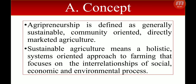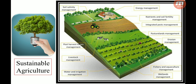Sustainable agriculture means a holistic, system-oriented approach to farming that focuses on the interrelationships of social, economic, and environmental processes. It creates a balance between these three dimensions and does not affect the environment in a bad manner. Looking at a picture of sustainable agriculture, we can see activities such as soil salinity management, energy management, nutrient and soil fertility management, integrated pest management, pastureland management, erosion management, fishery and aquaculture management, wetlands management, water and irrigation management, livestock management, and post-harvest losses management. So it is a process of making a healthy environment with a profitable enterprise.